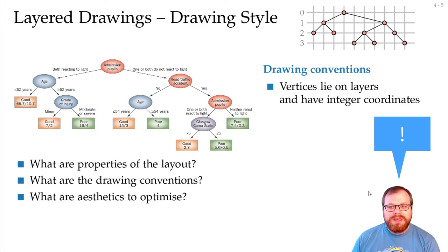I will list four for you. First, we want the vertices to lie on layers and have integer coordinates, like we can see here. Every vertex has an integer x and y coordinate, and we have those layers, which is just the depth of the vertices.